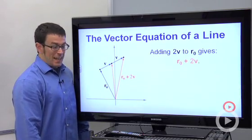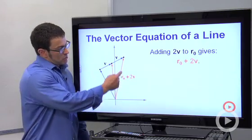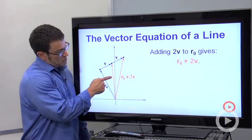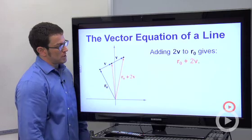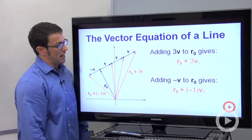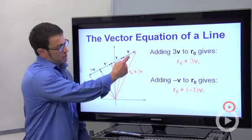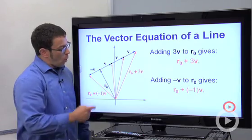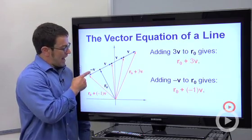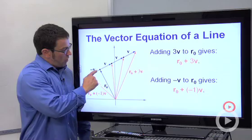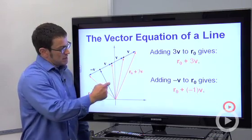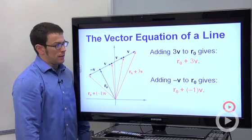Now, if I do this again, if I add a second v, I get r0 plus 2v. So this is still r0 plus v, this is r0 plus 2v, and I can do it again. I can add another v and get r0 plus 3v, or I could take r0 and add a negative v to it. But you'll notice that all the points that I get that correspond to these position vectors are all on a line.